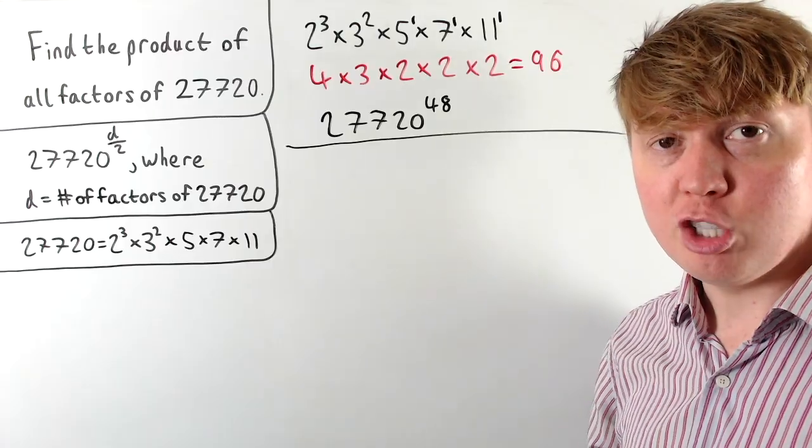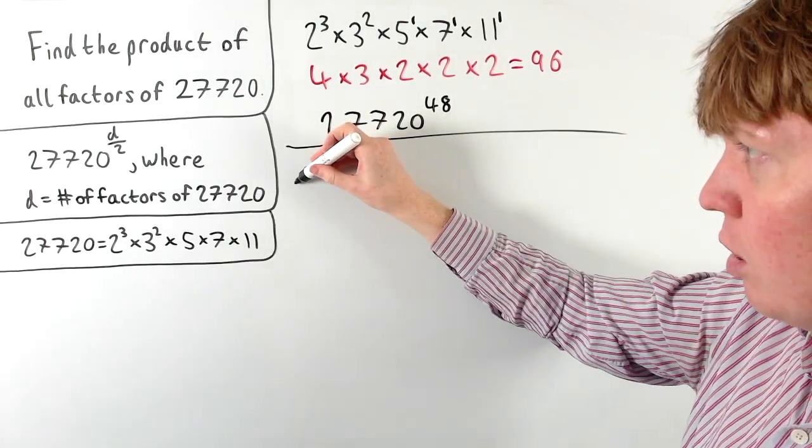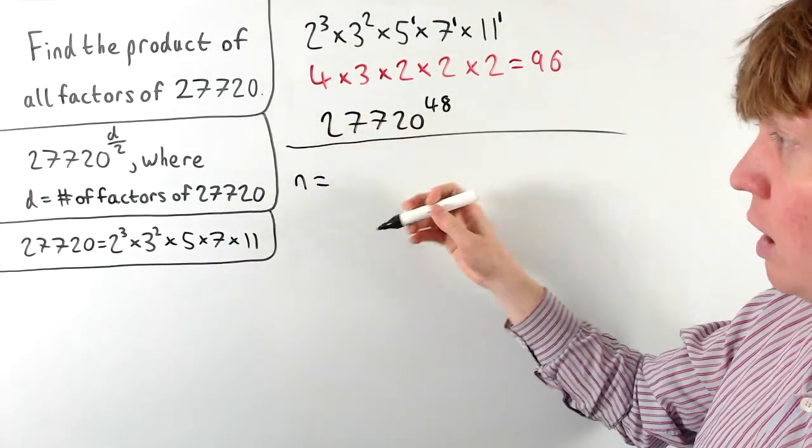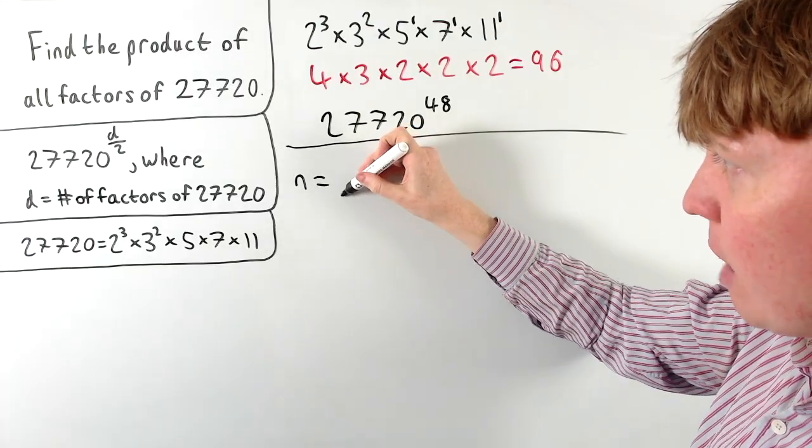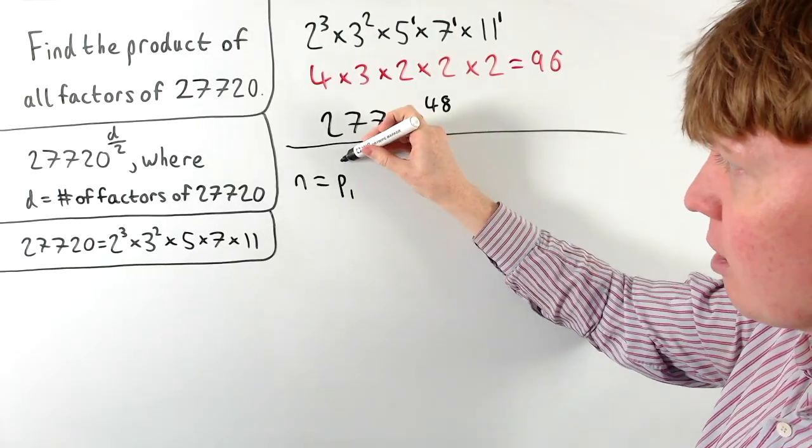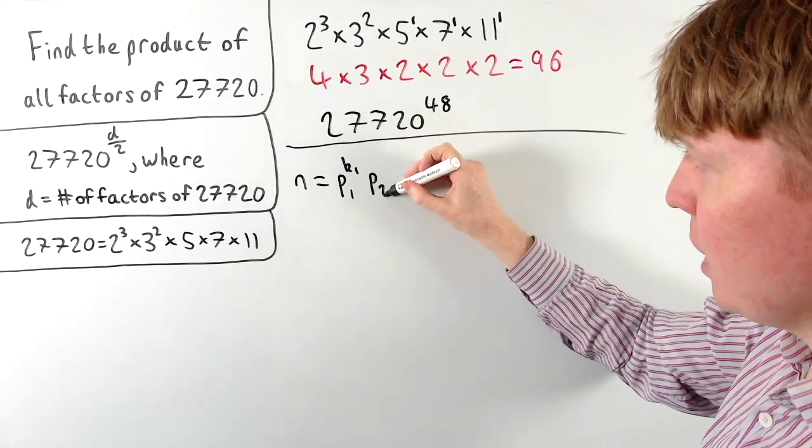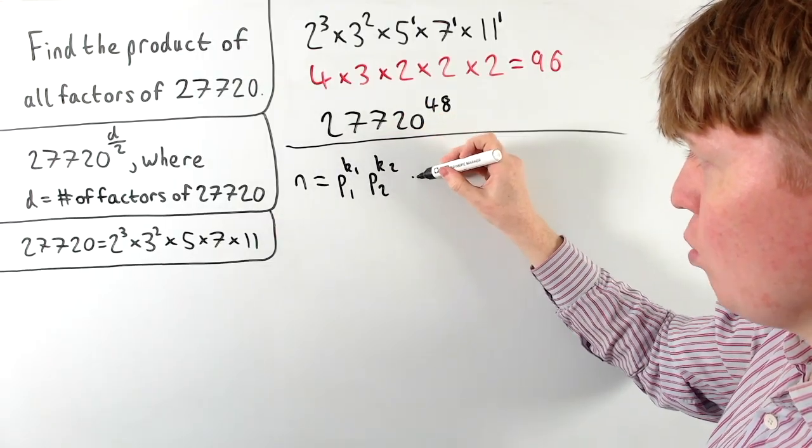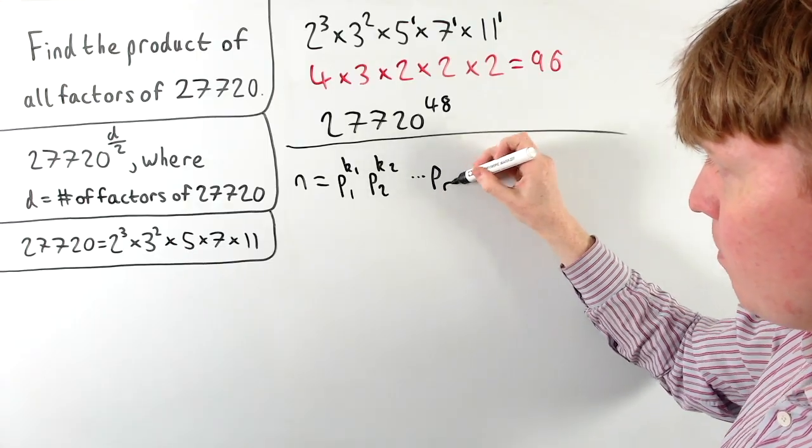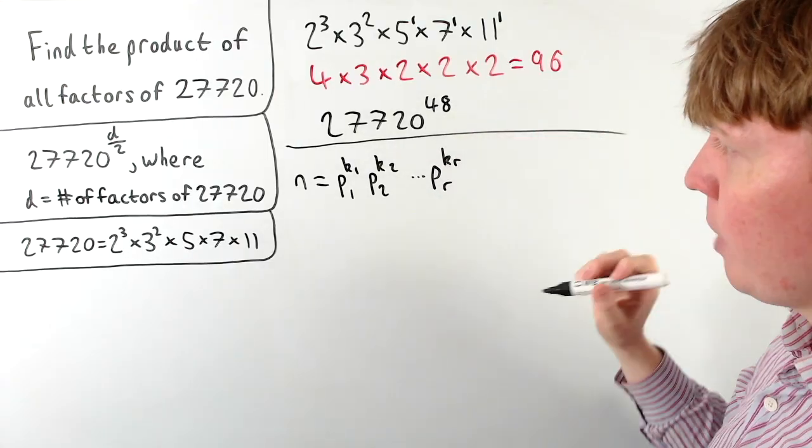And then just to see how we generalise this, let's imagine we've got another integer n, and if we write it in a general form as its product of prime factors, so its first prime factor, let's say this is raised to a power of k1, and then we've got p2 raised to a power of k2, and so on up to pr raised to the power of kr.